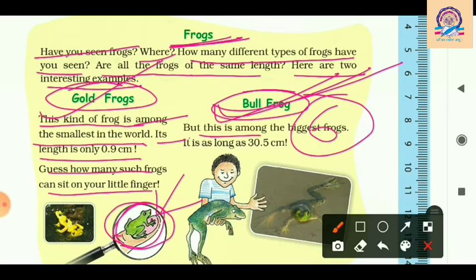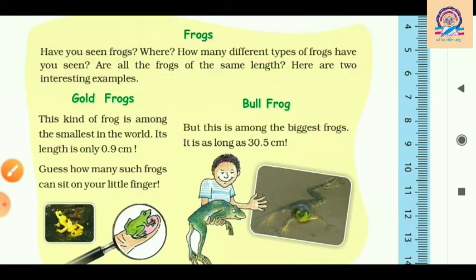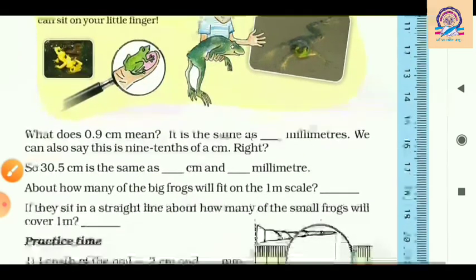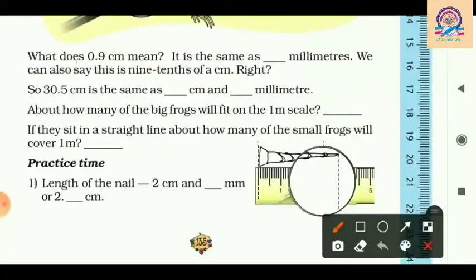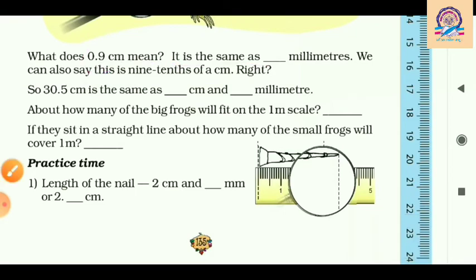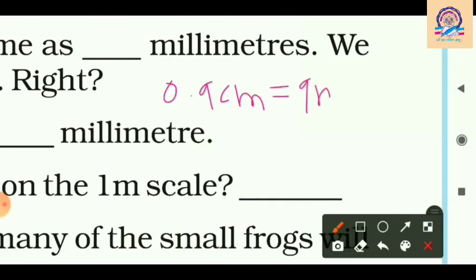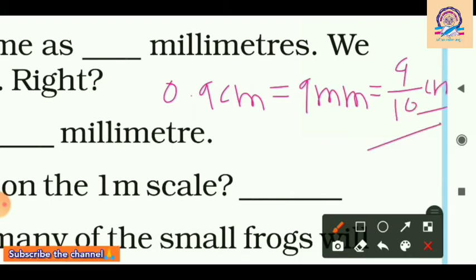Now let's know about the bullfrog — it is among the biggest frogs, as long as 30.5 centimeters. You can see a boy holding this bullfrog in his hand. Now, what does 0.9 centimeters mean? It is the same as 9 millimeters. We can also say it is 9 tenths of a centimeter. So 0.9 cm = 9 mm = 9/10 of a centimeter — all three are the same.